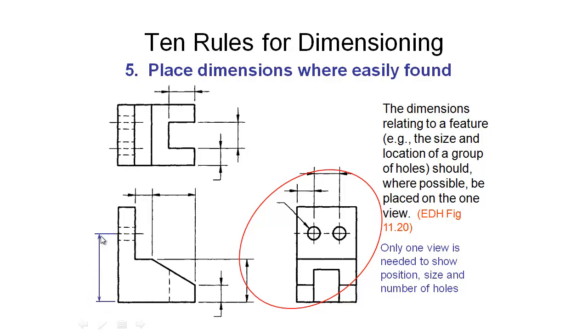It would be really annoying if instead of having this dimension here we moved it over to this view where it's a little bit harder for us to find, and so when we come to drill these holes we have to look backwards and forwards and there's increased potential to get the dimension wrong and drill these holes in the wrong place. So we wouldn't want to do that typically.